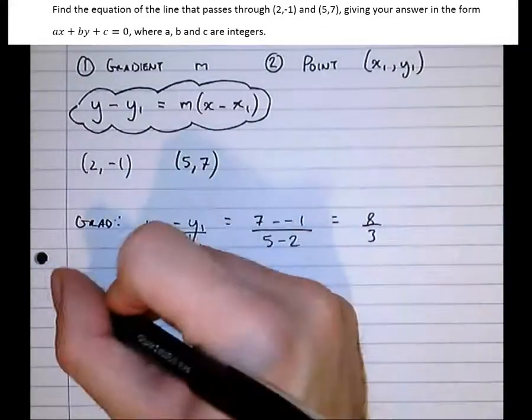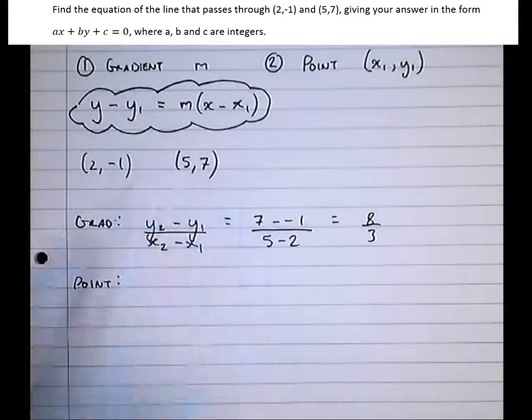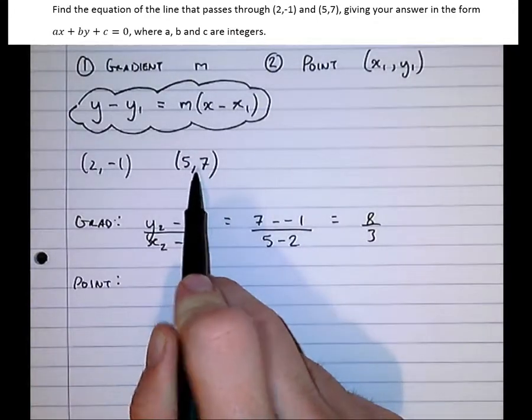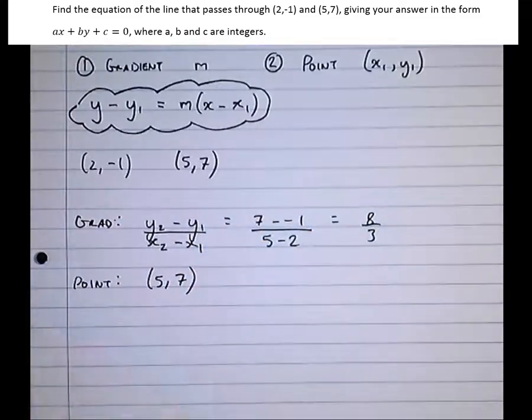The next part, the point, well this is dead easy because we've got a choice of two points on the line now. We know the line passes through both of those points. I'm going to choose my point to be the positive one. In my opinion, it makes it easier to keep numbers positive.